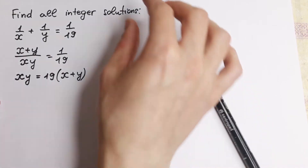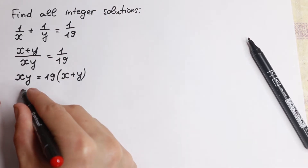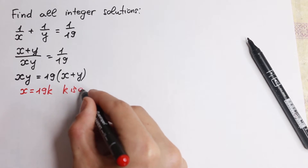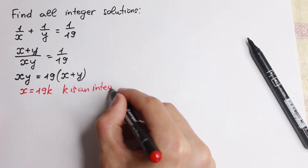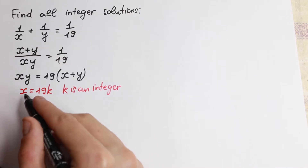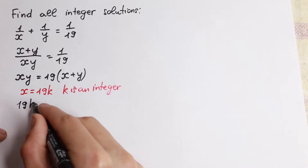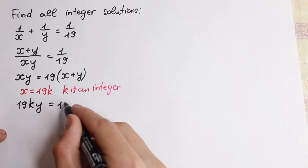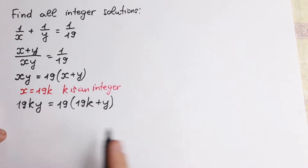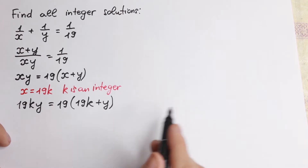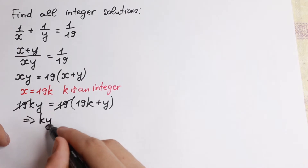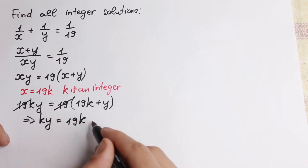I want to suggest a really good approach — let's use a substitution. So let x equal to 19k, where k is an integer. If we plug in 19k, we will have 19k times y equal to 19 times (19k plus y). We can easily cancel the 19, and as a result we have the equation ky equal to 19k plus y.